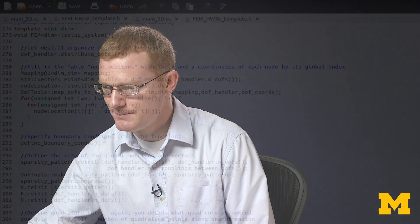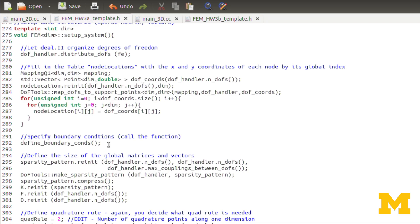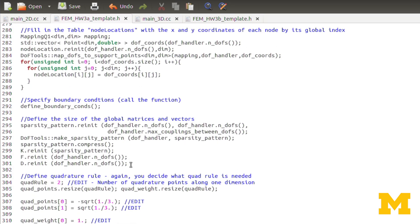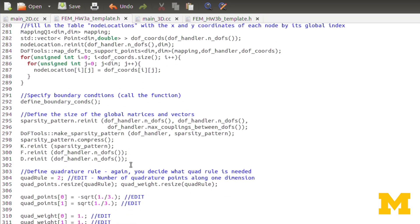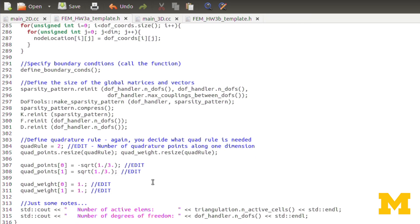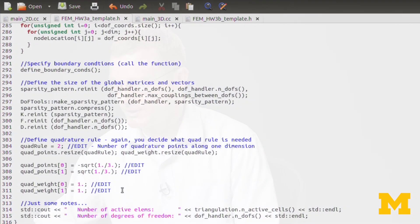We again call the Defined Boundary Conditions function, resize our vectors and matrices, we define the quadrature rule. Again, you'll need to decide what quadrature rule you need. Is 2 enough? Do you need 3? Or more or less? So not a lot to do here in Setup System. Not much different from before.